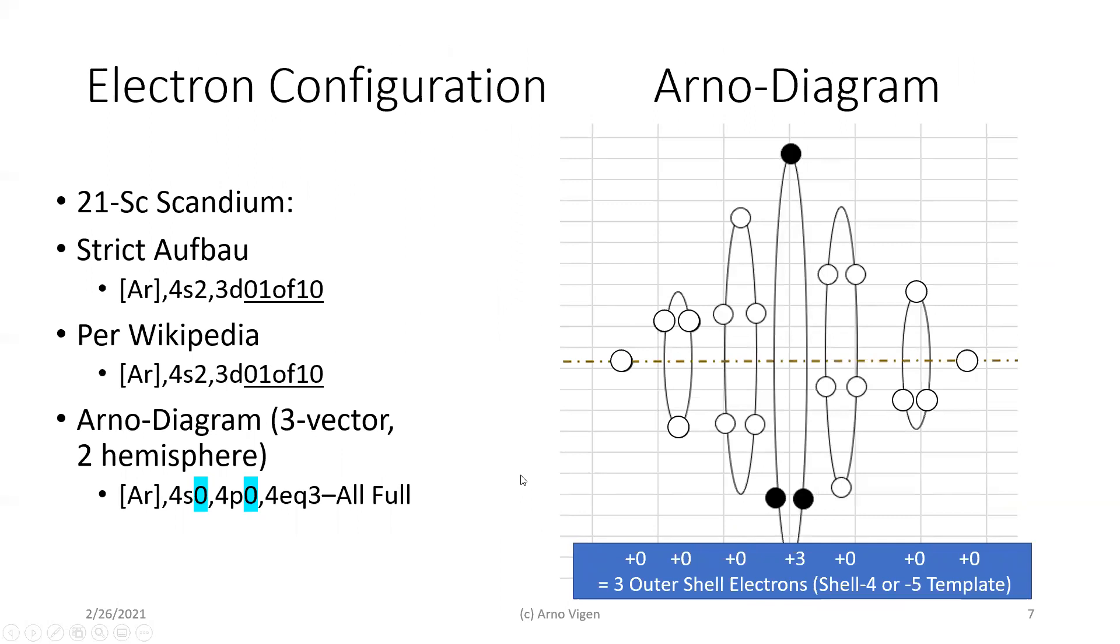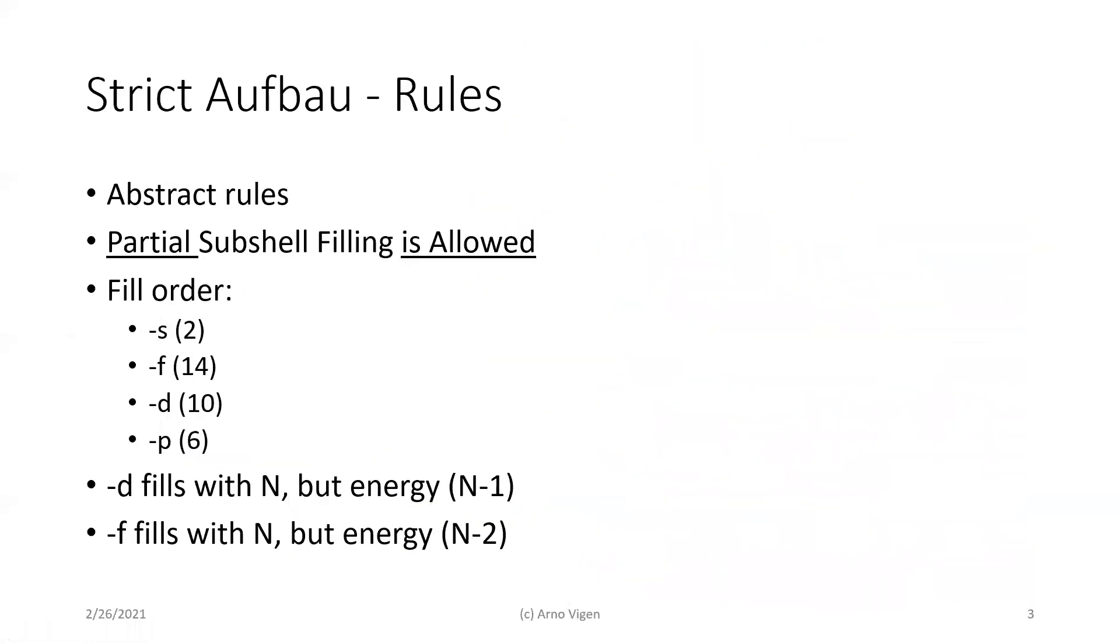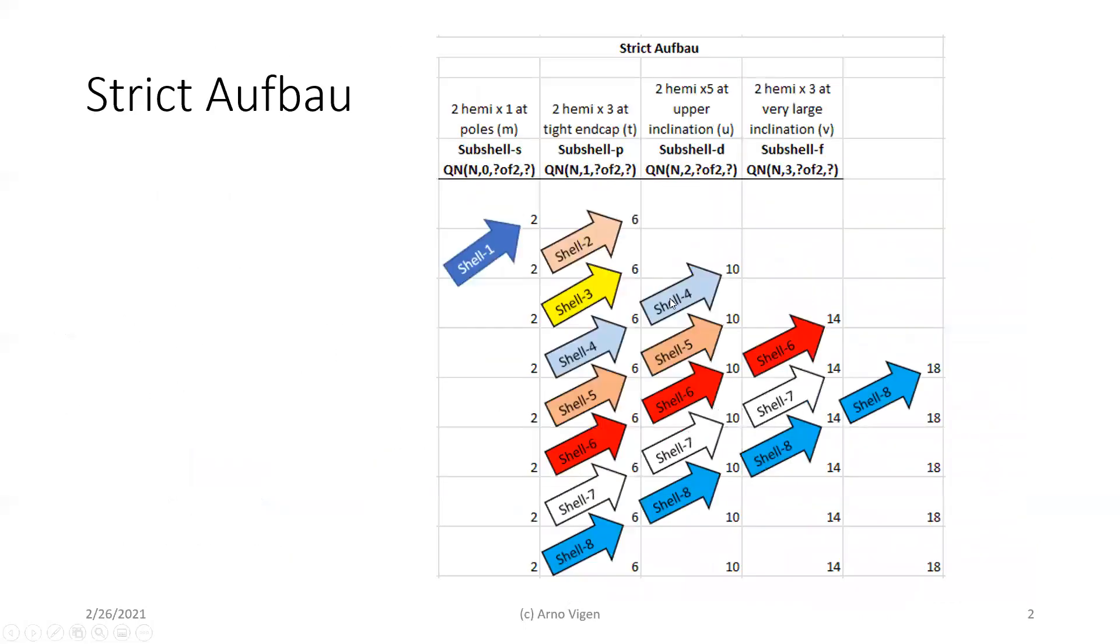So let's look specifically for 21 Symbol SC Scandium. Now, the strict AFBAL rule will say that you fill the two, and then you get one of the ten. So you fill the two, and then you get one of the ten.